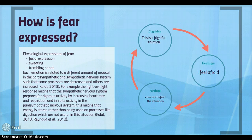The physiological expression of fear includes facial expression, sweating, trembling hands, and increased heart rate. Each emotion is related to a different level of arousal in the parasympathetic and sympathetic nervous system, such that some processes are decreased and others are increased.